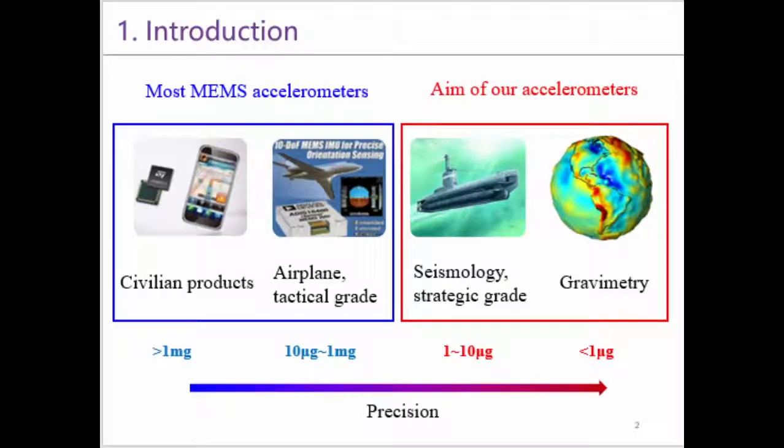MEMS accelerometers have been used in many kinds of applications. For civilian products, the precision of the accelerometer is often over one millig, where g means gravitational acceleration. The precision of the accelerometers in the airplane and tactical-grade application is between 10 microg and one millig. Our accelerometers aim to be used in high precision inertial navigation and gravity measurement. The precision needs to be below 10 microg.